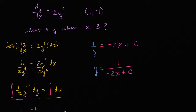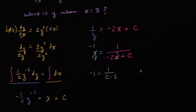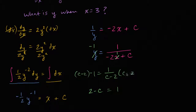Now we use the initial condition: the particular solution passes through (1, -1). When x is one, y is negative one. Substituting: negative one equals one over (negative two plus c), or one over (c minus two). Multiplying both sides by (c minus two) gives two minus c equals one, so negative c equals negative one, meaning c equals one.